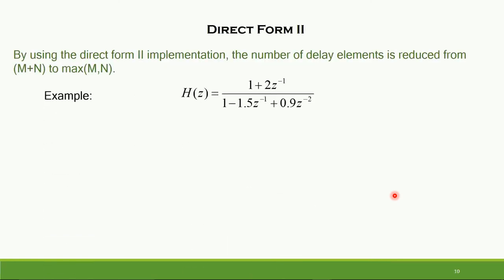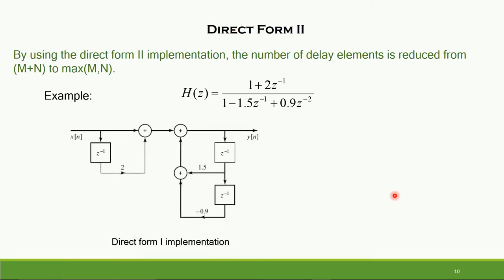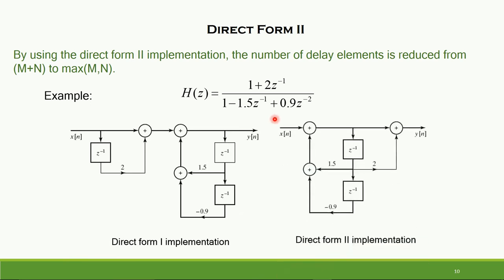The Direct Form 2 realization can be obtained for the transfer function given in this example. The Direct Form 1 implementation is obtained by splitting H of Z into two subsystems H1 of Z and H2 of Z, where H1 of Z relates to the numerator polynomial and 1 upon the denominator polynomial is H2 of Z. When we interchange the order of both subsystems, we are able to share the delay line between both the input and output subsections. Thus, the Direct Form 2 implementation requires one delay element fewer as compared to the Direct Form 1 realization.